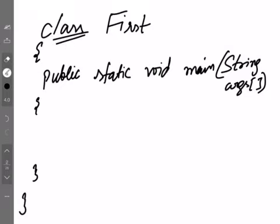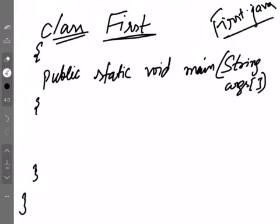Class is a group of data and methods. We use the class keyword here, then the name is your choice — you can give it anything. Then the filename: first.java. You should not save it with any other name. So the file name first.java must match the class name.